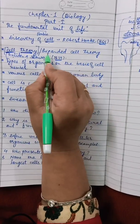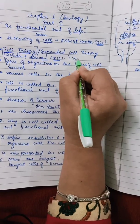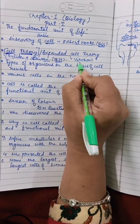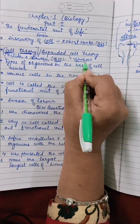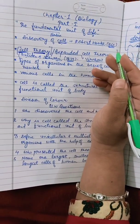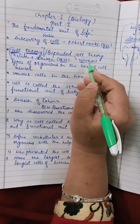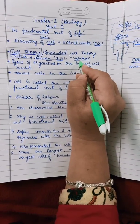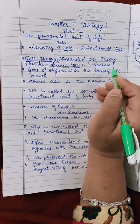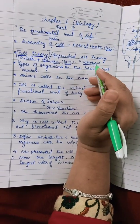Further, this cell theory was expanded by a scientist named Virchow. Virchow said that cells are made from pre-existing cells. This expanded cell theory was given by Virchow in 1855.